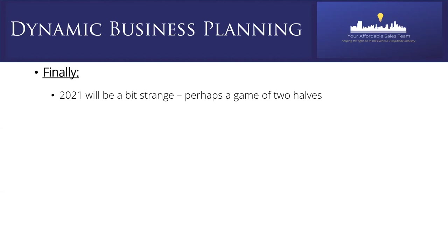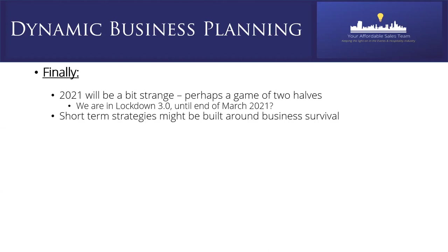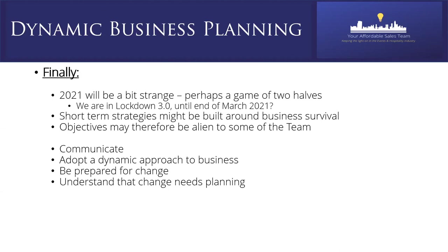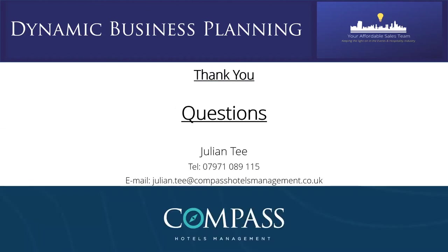Finally, 2021 is going to be strange — definitely a game of two halves. We're in lockdown 3.0 to the end of March, maybe longer. Short-term strategies will be built around business survival, with objectives very different and alien to the team, so it's important to communicate the plan. Adopt a dynamic approach, be prepared for change, understand that change needs planning — and don't be afraid to ask for help. Thank you.